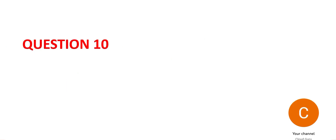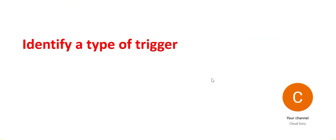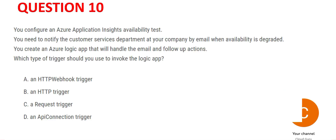Let's look at Question 10 — this is an interesting question. Applying the KISS principle — Keep It Simple and Stupid — in a nutshell, you have to identify a type of trigger that will be used to invoke a Logic App. The scenario is you need to inform the customer service department if Application Insights is having a problem with availability or uptime.